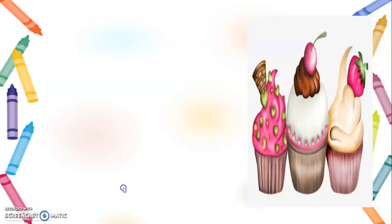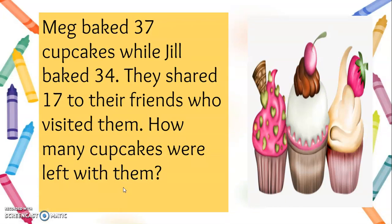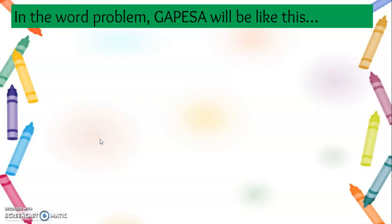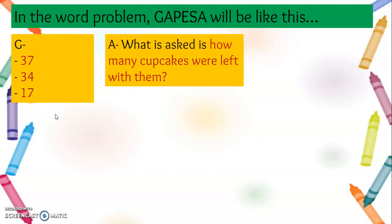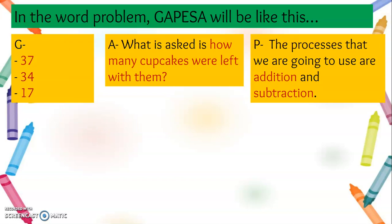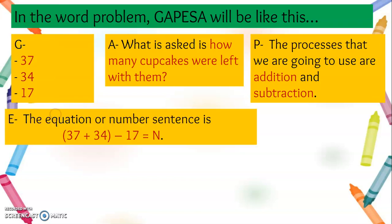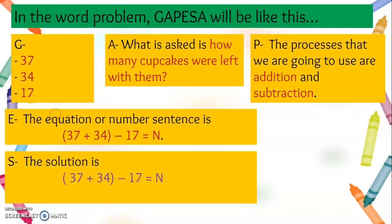Let's have another example. Meg baked 37 cupcakes, while Jill baked 34. They shared 17 with their friends who visited them. How many cupcakes were left with them? What are given: 37, 34, and 17. What is asked: how many cupcakes were left? The processes are addition and subtraction. The equation is: (37 + 34) − 17 = N. The solution: 37 plus 34 equals 71, and 71 minus 17 equals 54.